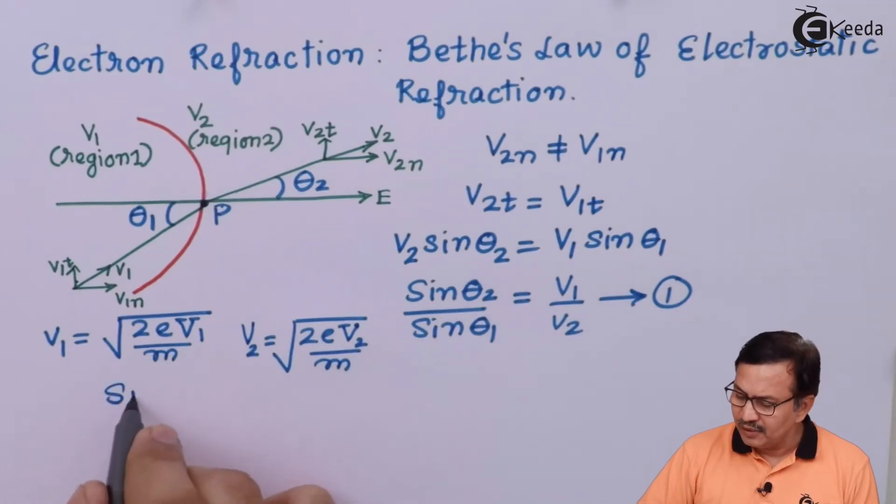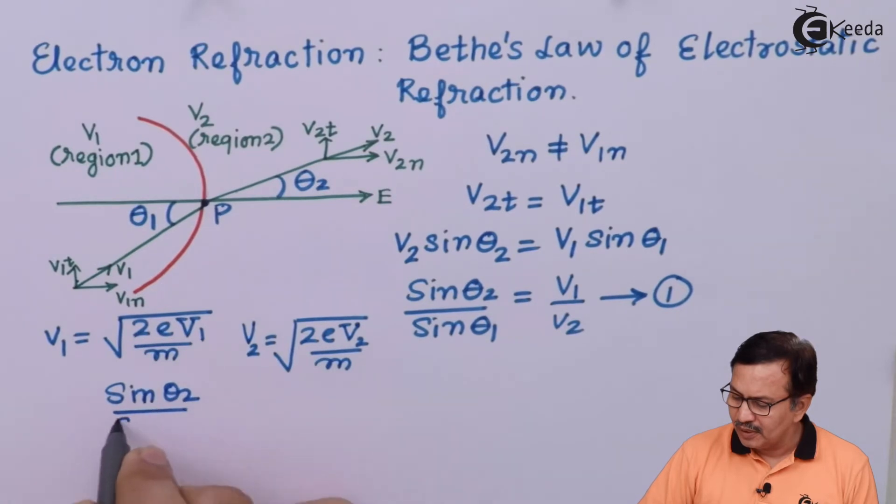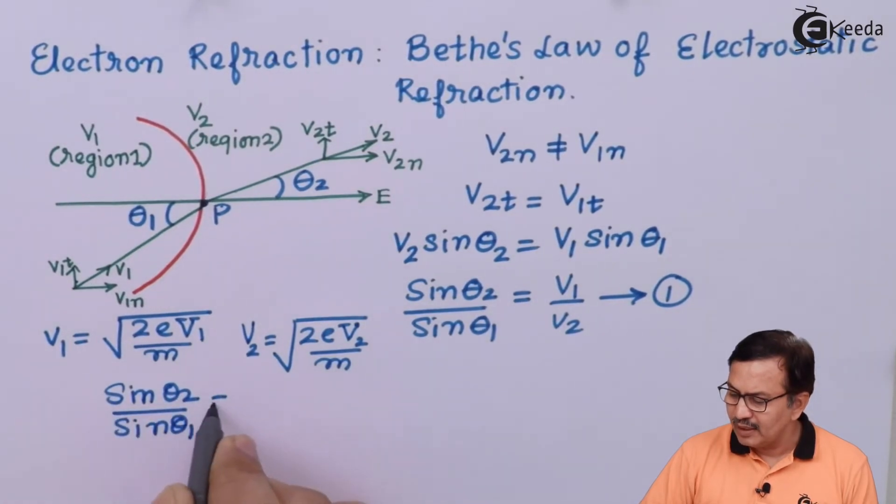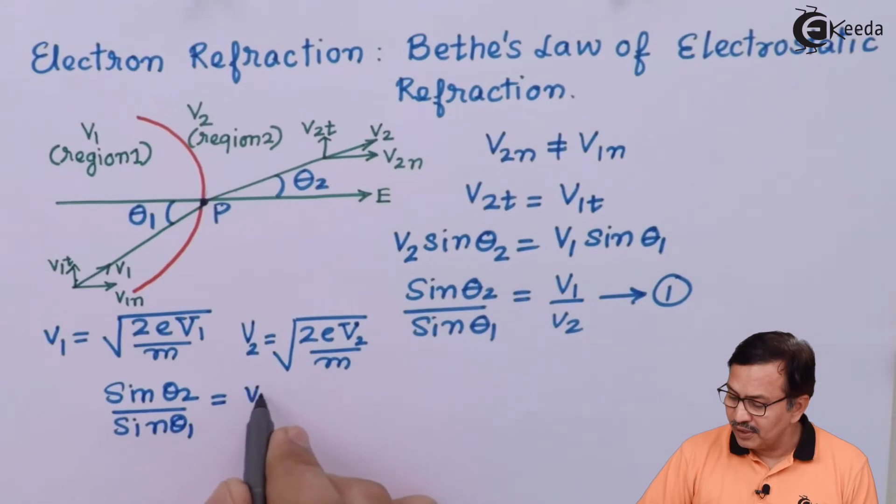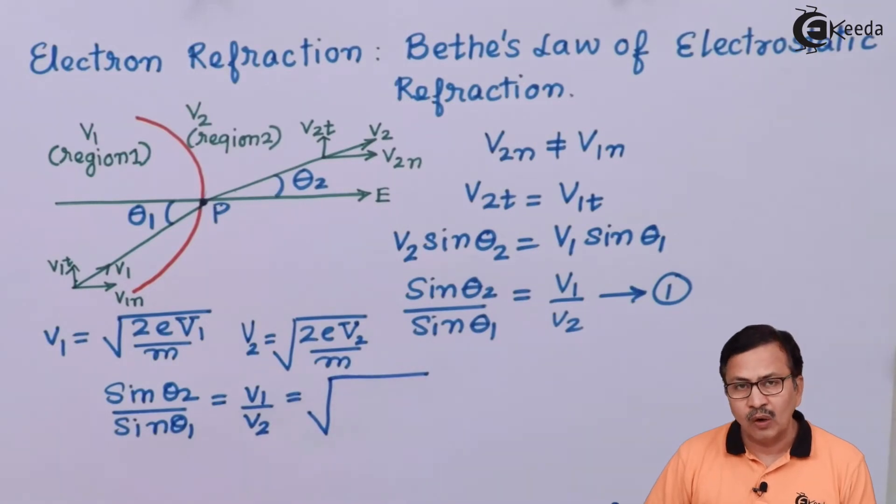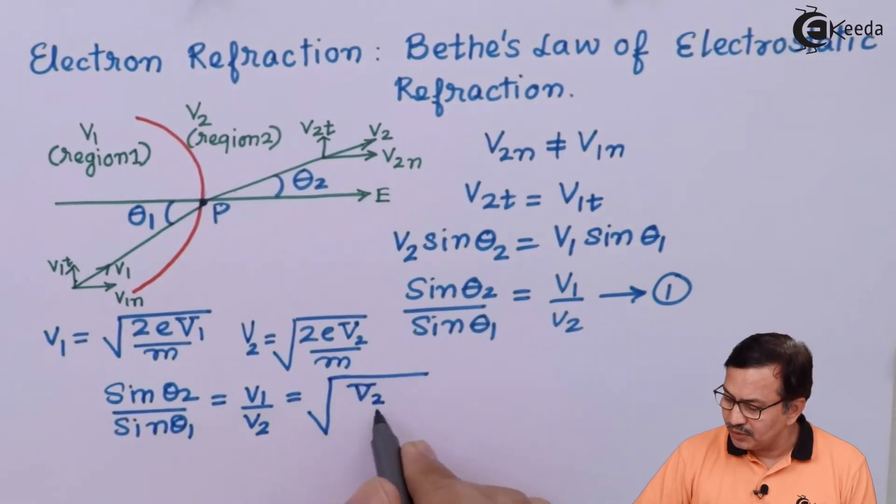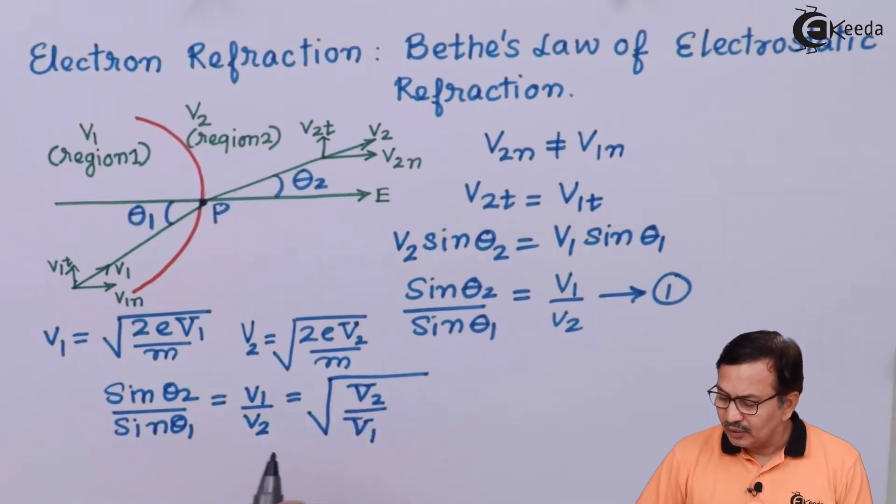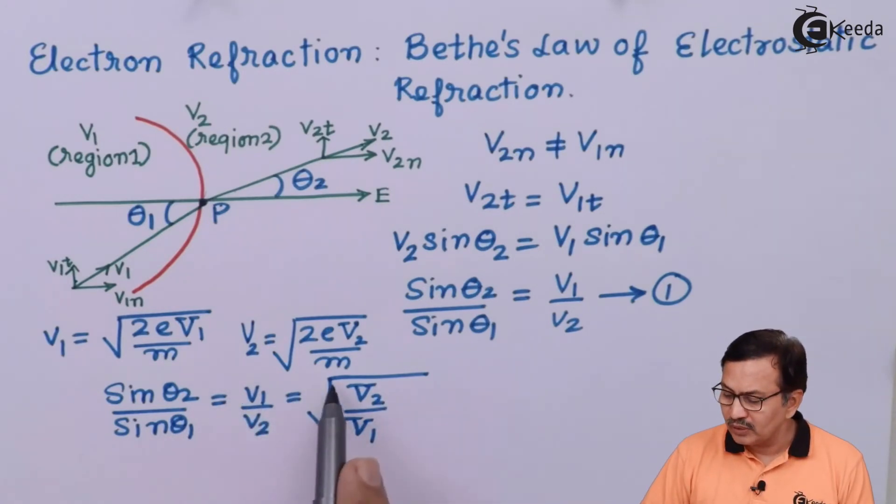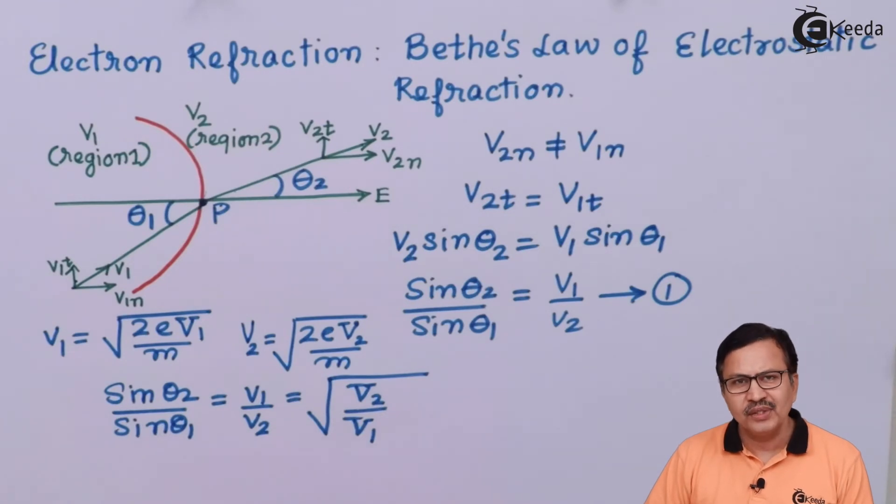And therefore, your sin of theta2 upon sin of theta1 is equal to the ratios of the velocities, or the square root of the potentials through which the electrons have been accelerated.